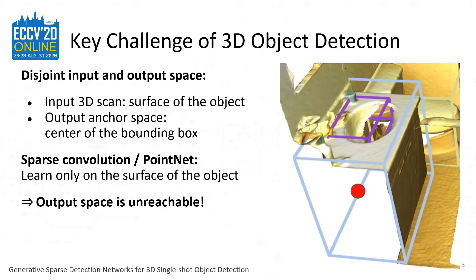One of the key challenges of 3D object detection is that the input and output space are disjoint. That is, the input 3D scan observes the surface of the object, whereas the output anchor space makes predictions at the center of the instance. As you can see in the figure on the right, the center of the instance where you want to ground the bounding box prediction on is disjoint from the observable surface. This is especially problematic for efficient 3D learning algorithms such as sparse convolution and PointNet, where learnable parameters are applied only at the surface of the object, which makes the output space unreachable.